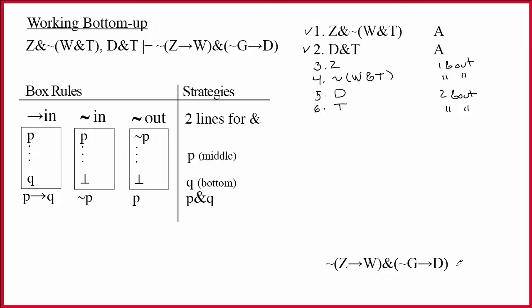The first thing we do when we go to the bottom is identify the main connective. Pretty obviously, it's the ampersand. Sometimes people make the mistake and think it's this tilde up in front, but the tilde can only be the main connective when it's the only thing that's outside parentheses. The ampersand is outside parentheses, so clearly it's the main connective. The main connective tells us which of these four things to do. It's not an arrow, it's not a tilde, it's not nothing, it's an ampersand. So that means do two lines for ampersand.